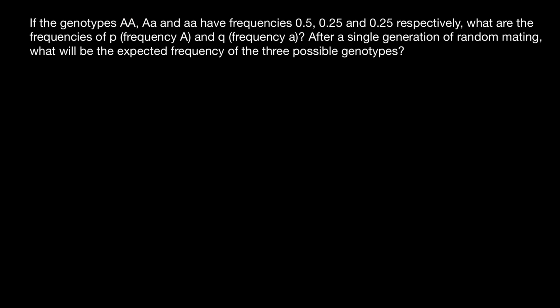Here's the question: if the genotypes homozygous dominant, heterozygous, and homozygous recessive have frequencies of 0.5, 0.25, and 0.25 respectively, what are the frequencies of P (dominant allele A) and Q (recessive allele A)? After a single generation of random mating, what will be the expected frequency of the three possible genotypes?